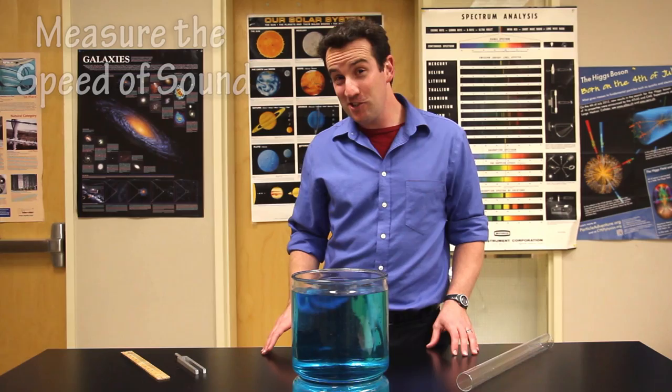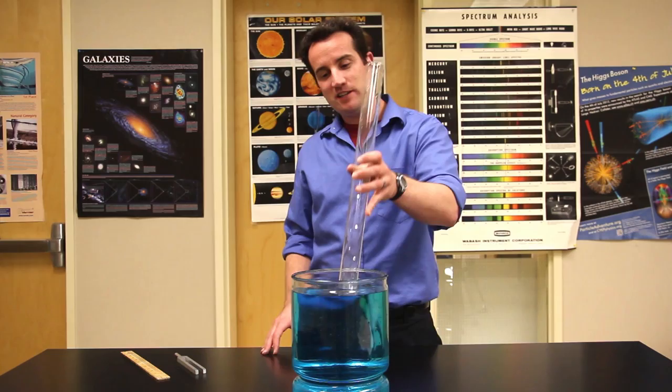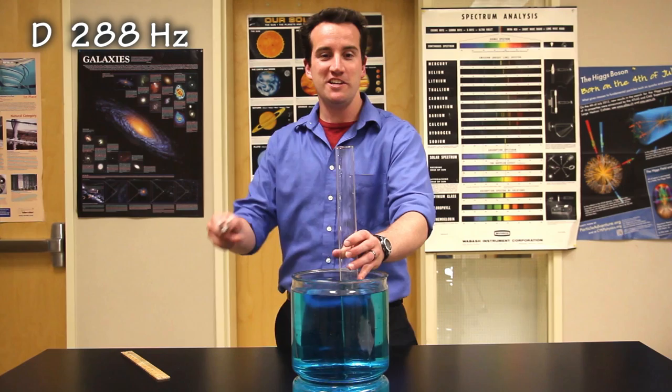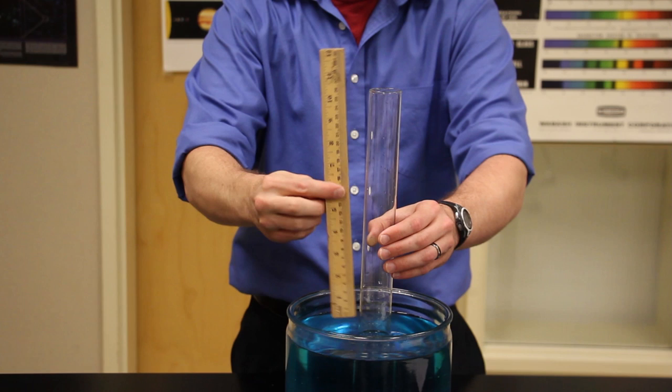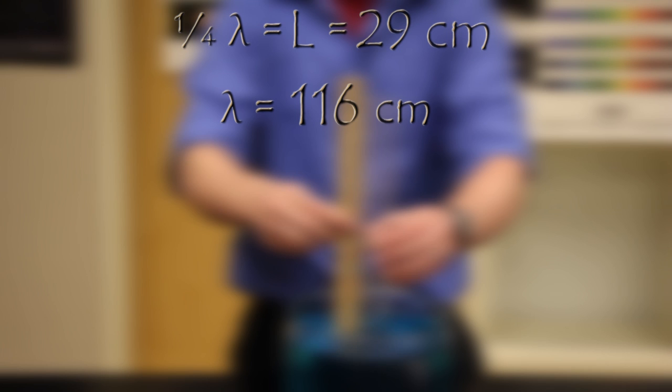Here's another trick you can try to instead measure the speed of sound. Take a tube that's open at both ends and dip it in water. Then, with another tuning fork of known frequency, try to find the resonance. One-fourth of the wavelength seems to be about 29 centimeters.